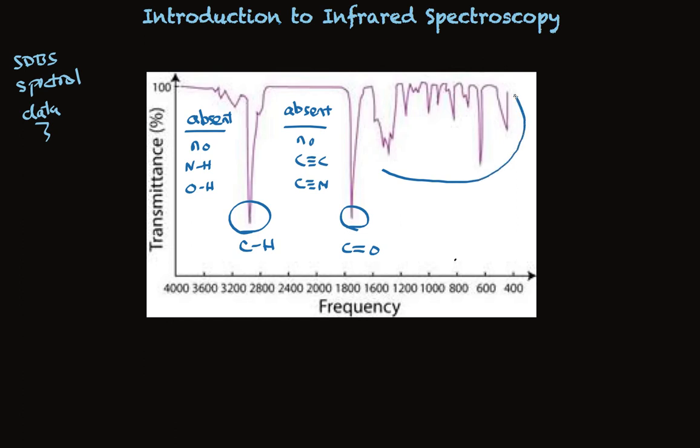On the right, we see a complicated pattern that will be very difficult to interpret. It's the fingerprint region, and it will let us determine whether our sample is exactly the same structure as some other sample. Now, this doesn't tell us what structure it is, does it? Unless we guess correctly and find the fingerprint match in a database.